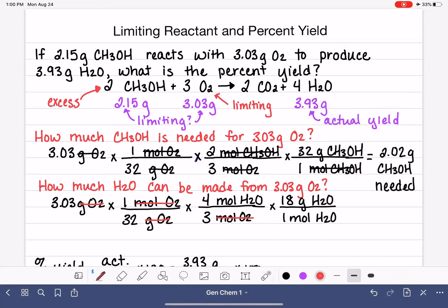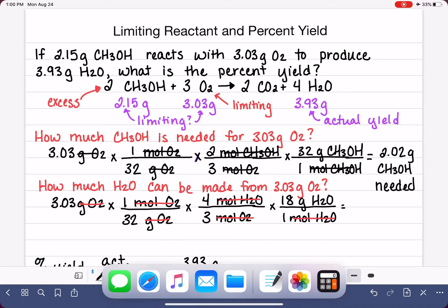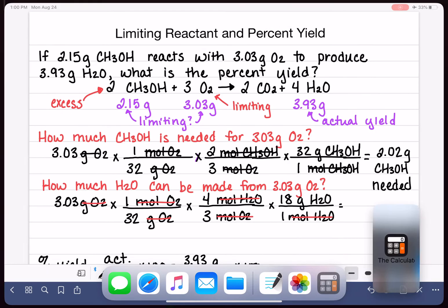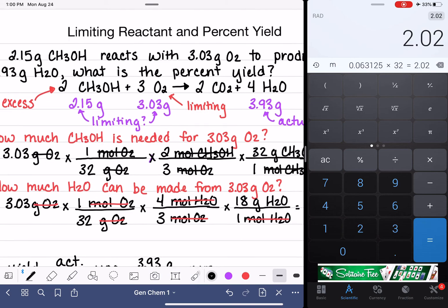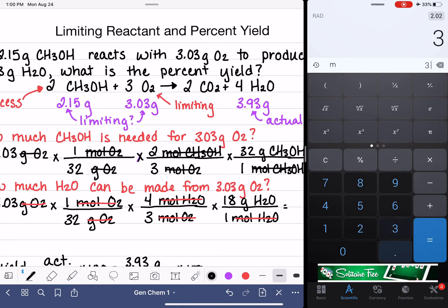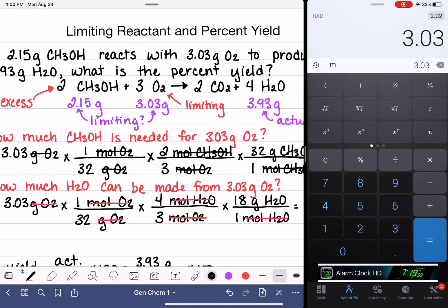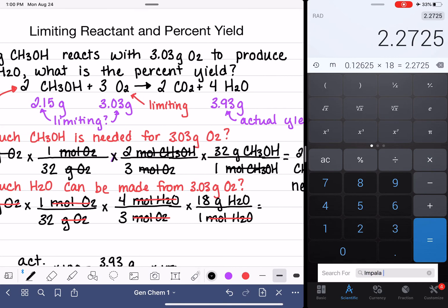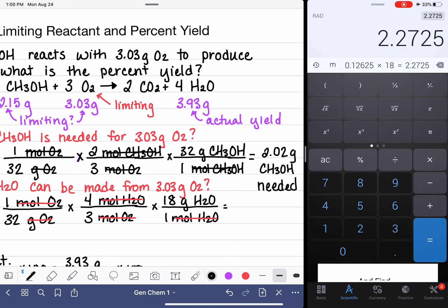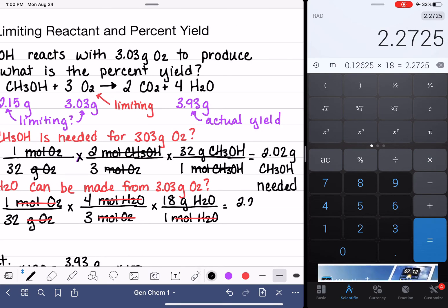And we will cancel out those moles of H2O, and we'll go back to the calculator one more time to figure out how much water we're making here. So now we have 3.03 divided by 32, times 4, divided by 3, times 18.